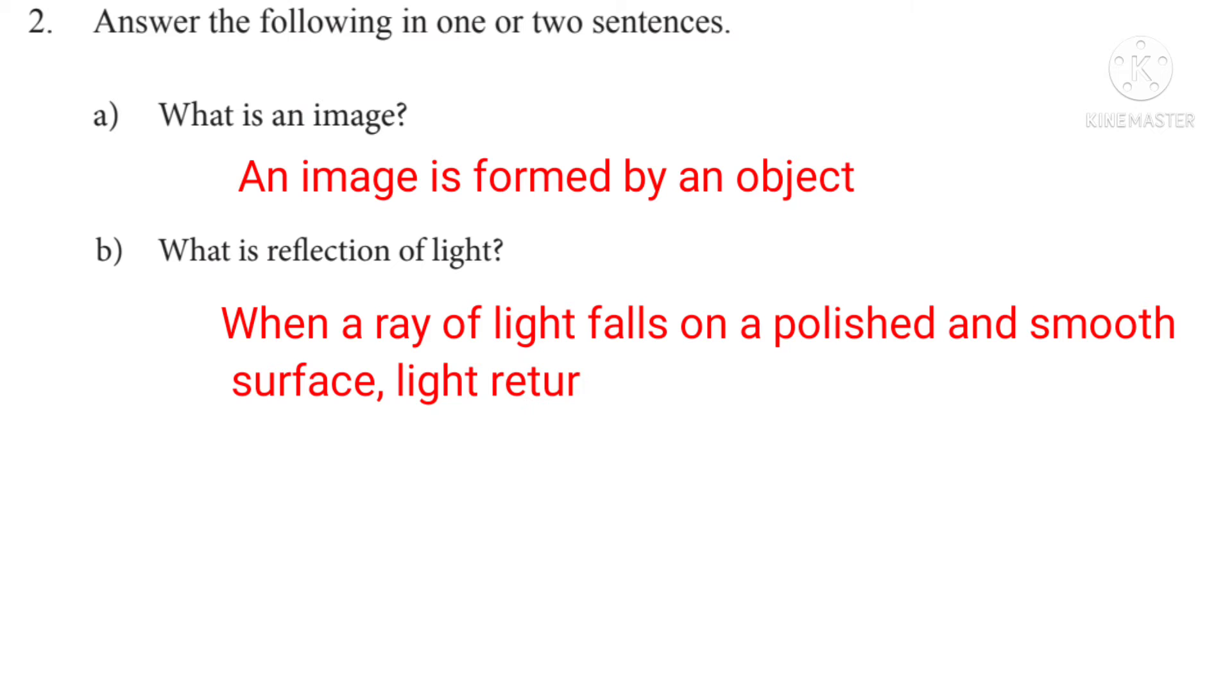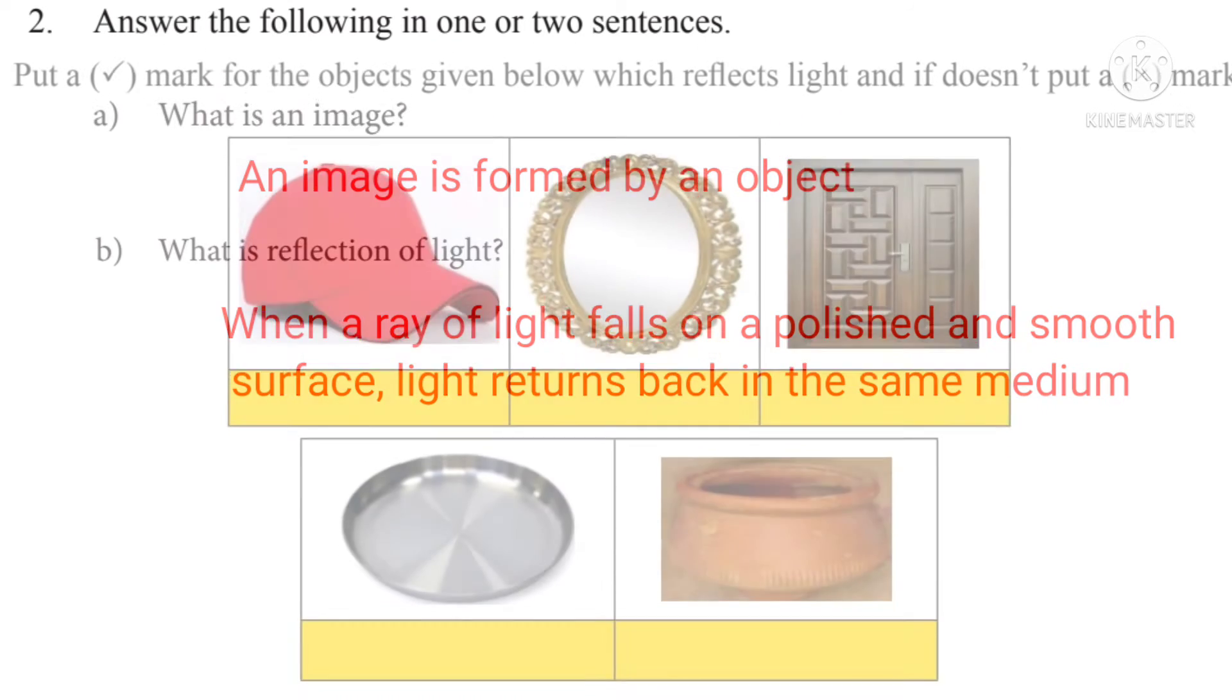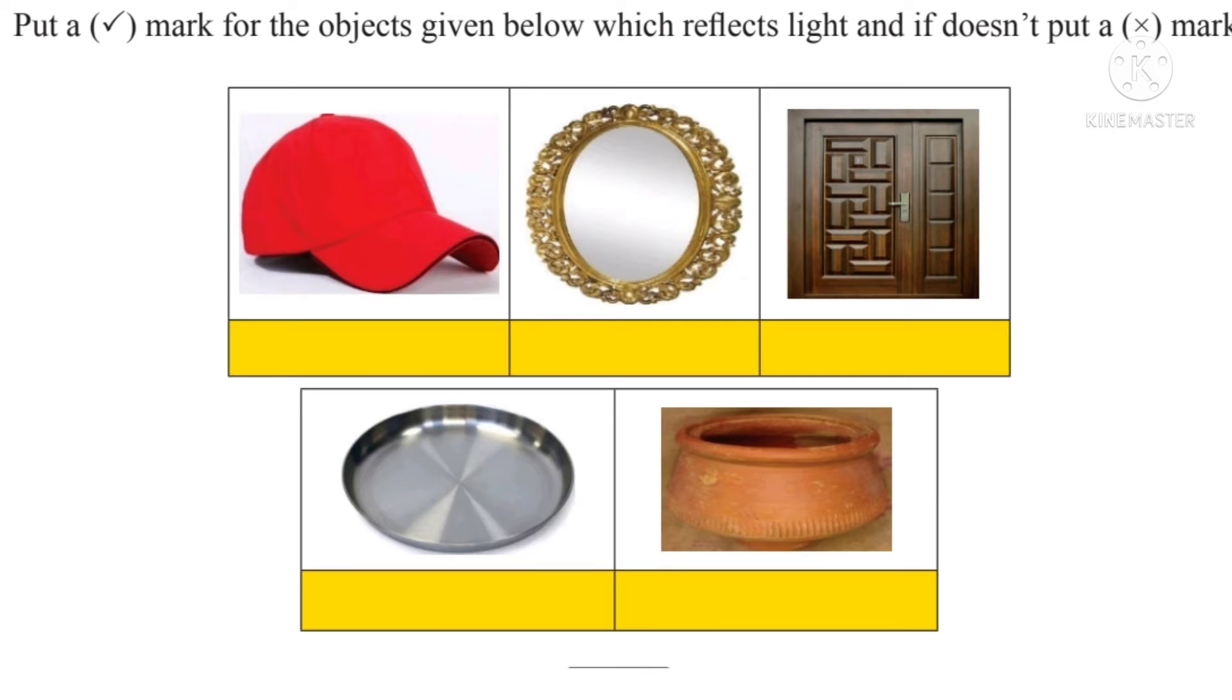Third question, put a tick mark for the objects given below which reflects light and if it doesn't, put a cross mark.